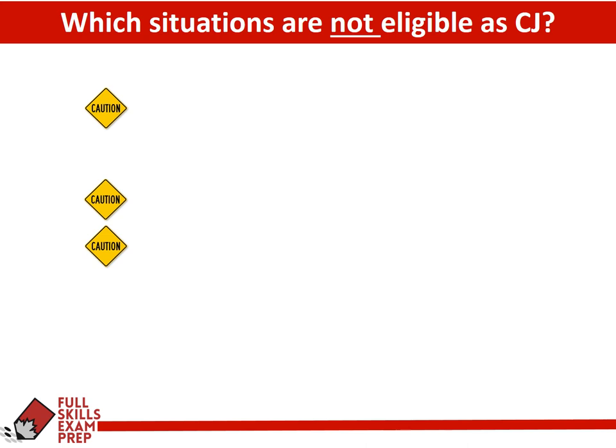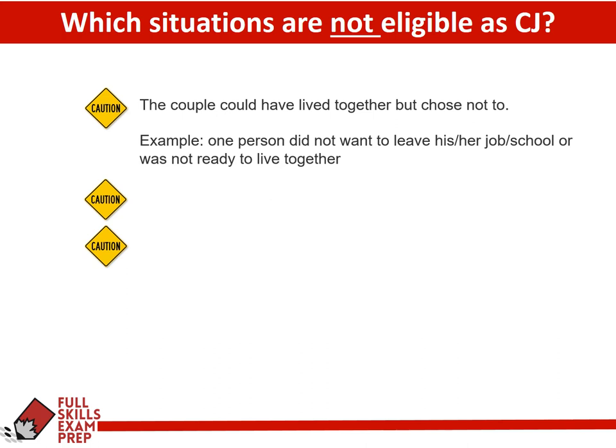Let's take a look at some common situations that do NOT make a person eligible for sponsorship as a conjugal partner. One is that the couple could have lived together but they just chose not to. That is not a conjugal relationship — these are meant for extreme conditions that the RCIC or the couple would have to prove. If a couple chose not to live together — maybe one had a great job or was in school or they just weren't ready — that does not qualify as a conjugal partner.